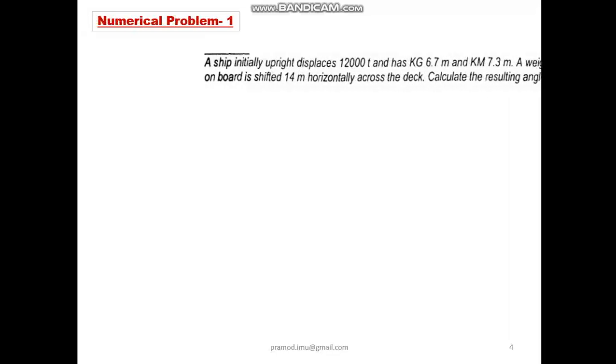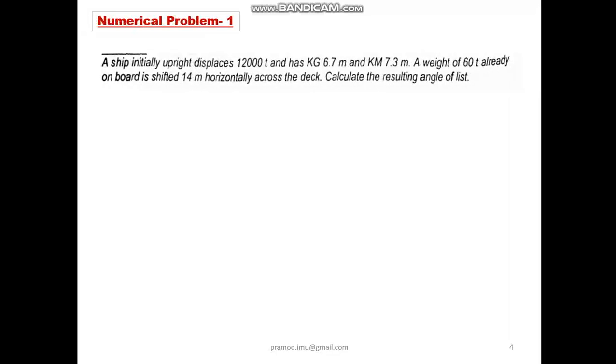Now let us just discuss a numerical which will help you understand this idea. A ship initially upright displaces 12,000 tons and has centre of gravity 6.7 meters and metacenter 7.3 meters. A weight of 60 tons already on board is shifted 14 meters horizontally across the deck. Calculate the resulting angle of list.